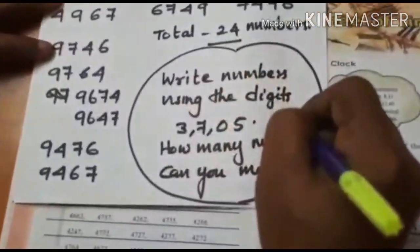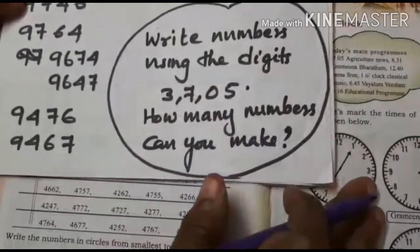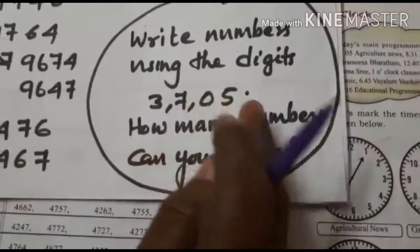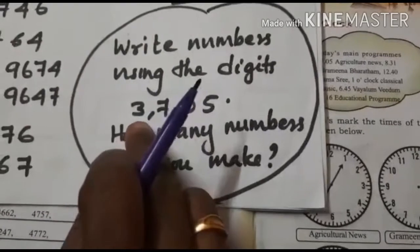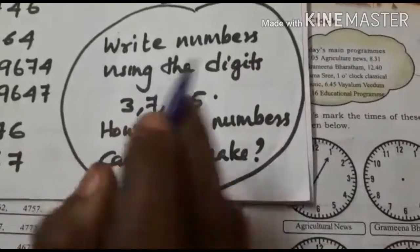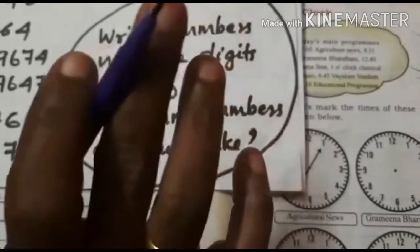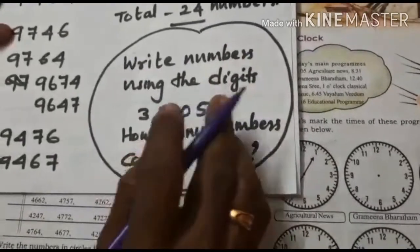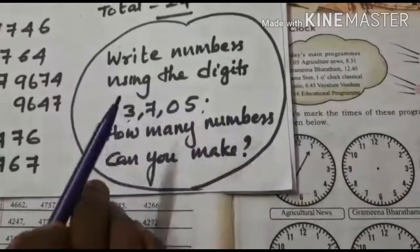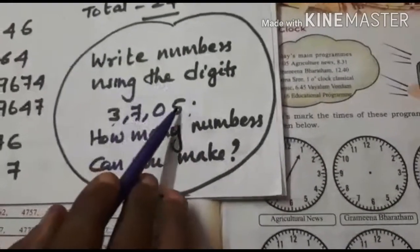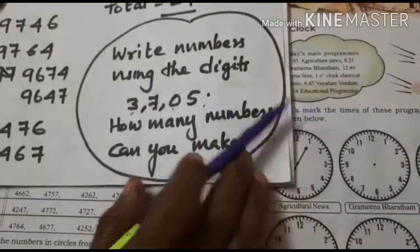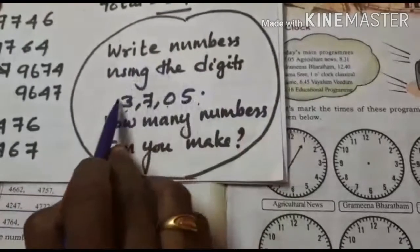Like that, write the numbers using the digits 3, 7, 0, and 5. Can you say how many numbers you can make? Here also you might say 24 numbers, because there are 4 digits — 1 × 2 × 3 × 4. But here is a problem: 1 digit is 0. No number starts with 0. Therefore we can write numbers starting from 3, 7, and 5 only. Starting with 3: 6 numbers. Starting with 7: 6 numbers. Starting with 5: 6 numbers. But starting with 0 we can write no number. Therefore we can write 24 minus 6 = 18 numbers only with these 4 digits.